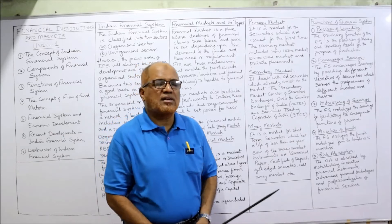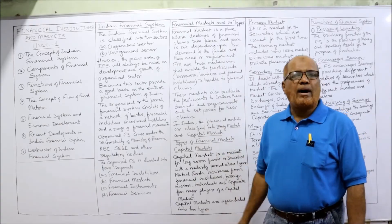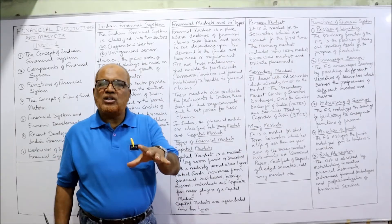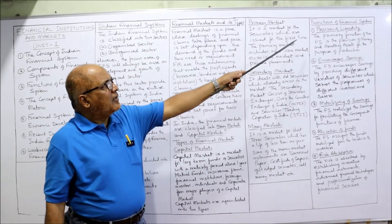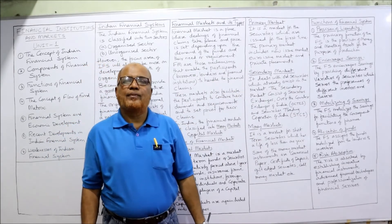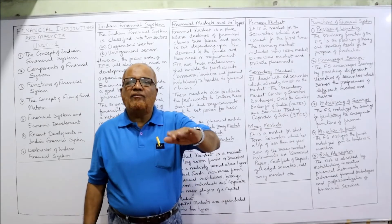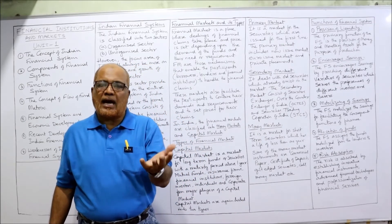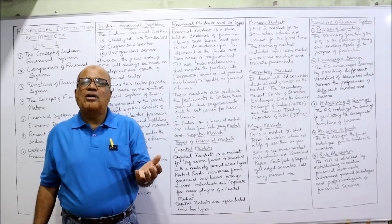The next topic is the functions of the financial system. So far I have discussed the concept of the financial system and financial markets. Now I will explain the functions of the financial system — why a financial system exists in every country. The first function is the provision of liquidity. Liquidity means convertibility — converting one asset into another asset.